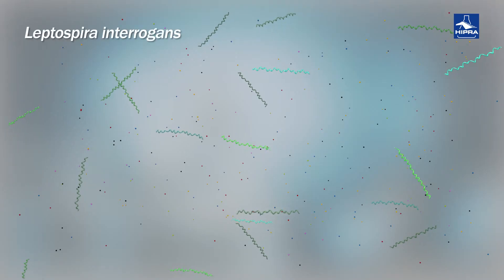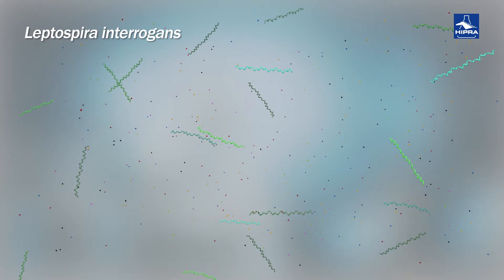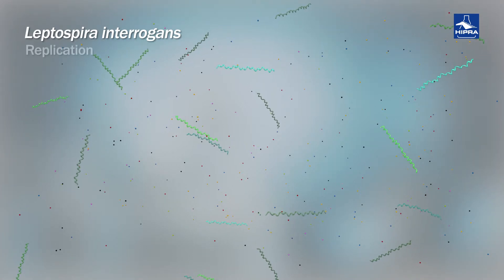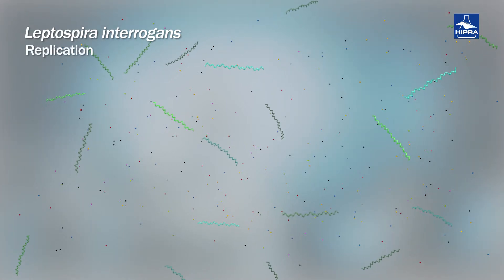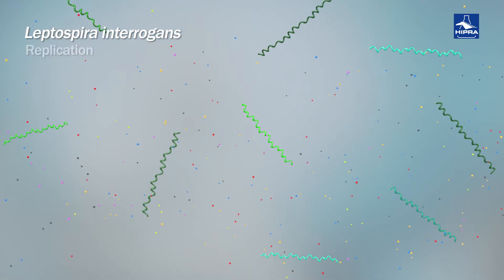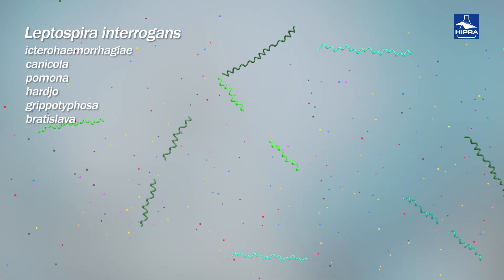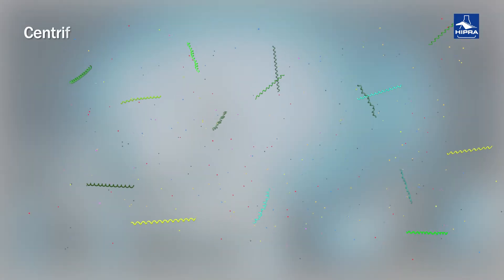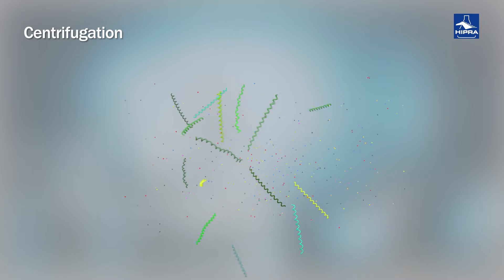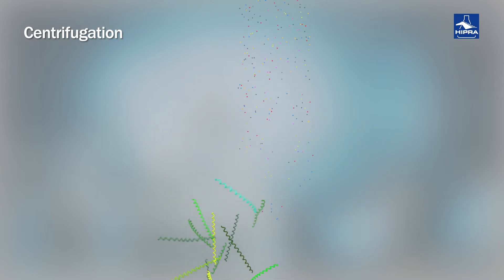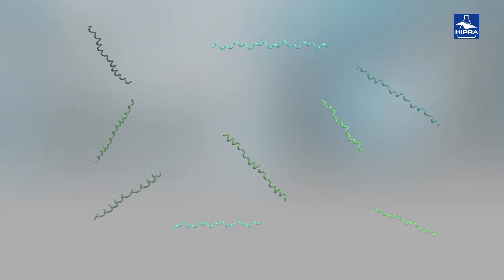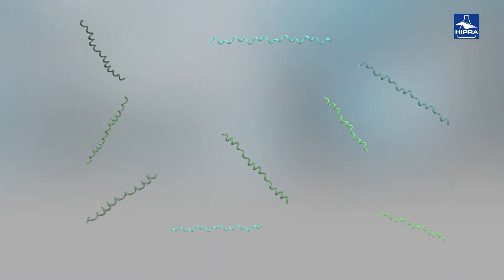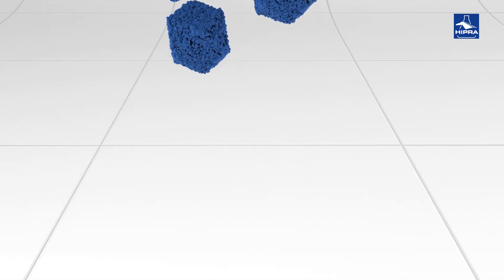Leptospira interrogans is observed in a culture medium, where it replicates. Different serovars can be seen, such as Icterohaemorrhagiae, Canicola, Pomona, Hardjo, Grippotyphosa, and Bratislava. Finally, it is centrifuged to eliminate the main residue from the culture medium and the metabolites from Leptospira, thereby obtaining the antigens which will allow us to offer effective protection against the six most prevalent serovars of Leptospira interrogans.